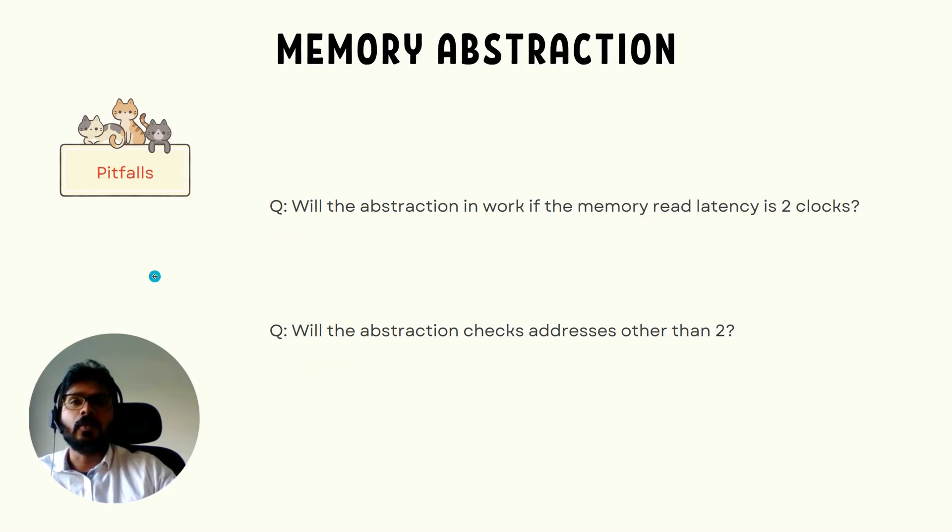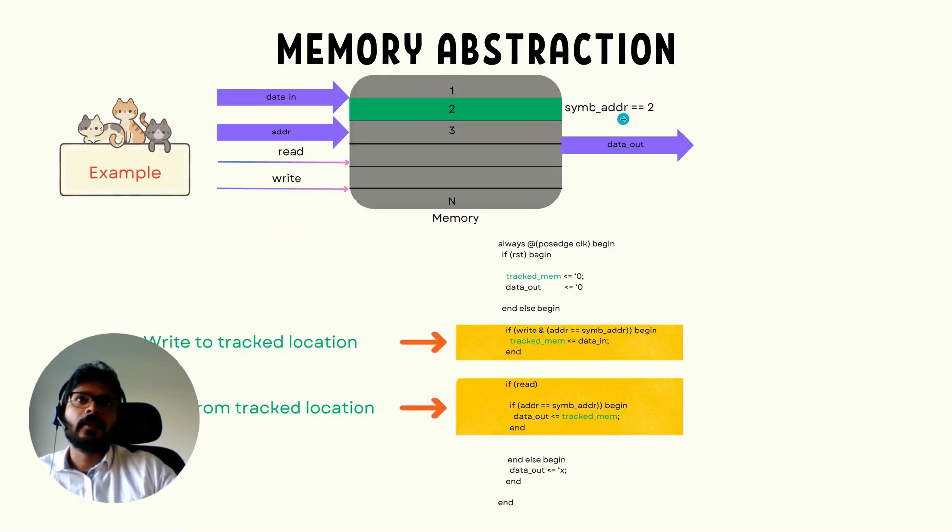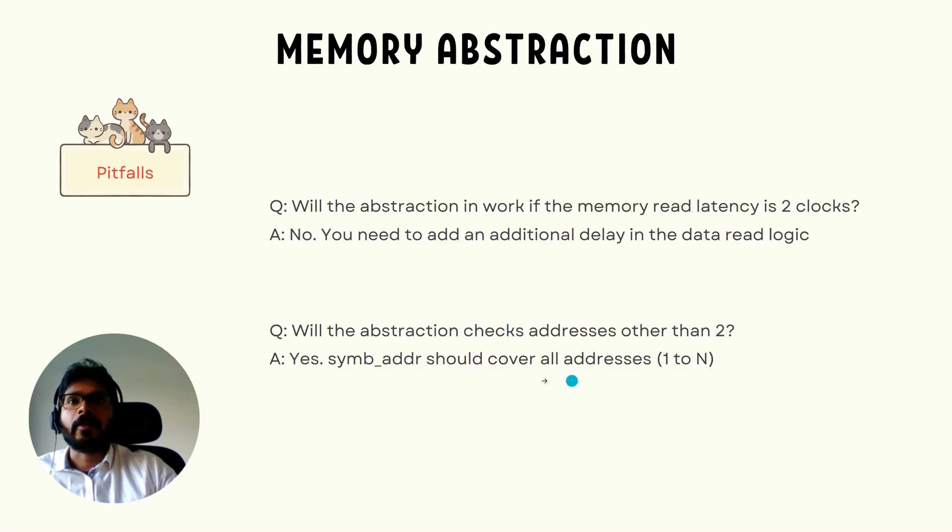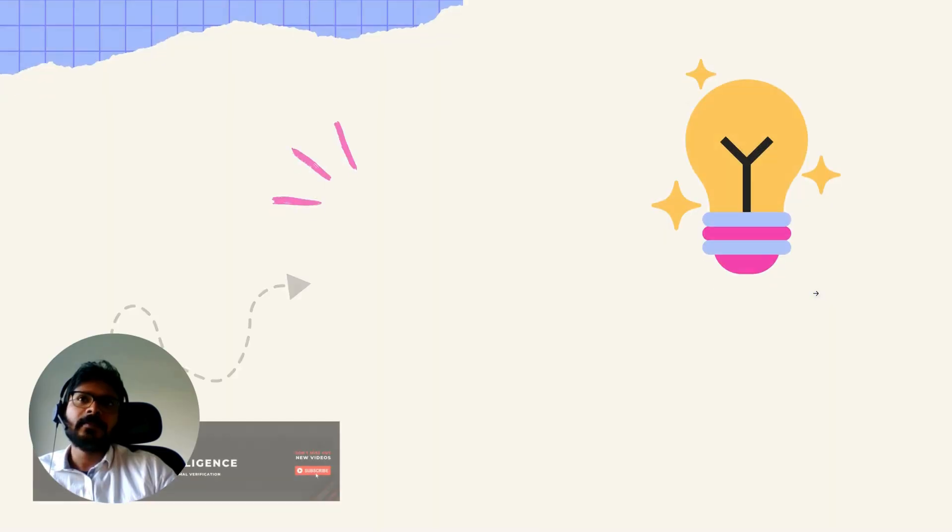And will the abstraction check for all addresses, or will it check just the address 2, which is a symbolic address here? So the thing with symbolic address is that it's free to choose any value as long as you don't add some over-constraints on that. So in this case, it is going to take all the values one to n, but in a single formal run it will take only a single value. So it doesn't mean that it's not going to cover other cases. It is going to cover other addresses as well. In fact, all the addresses. So the answer is yes, the answer is yes.